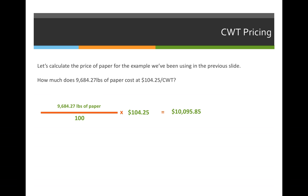Let's take a look at this example. How much does 9,684.27 pounds of paper cost if it's priced at $104.25 per 100 weight? The formula takes the pounds of paper — 9,684.27 pounds — divides it by 100, and multiplies it times the price per 100 pounds, which is $104.25. When you divide 9,684.27 by 100, you're essentially moving the decimal two spaces to the left, so it comes out to 96.8427. Multiply that times 104.25.